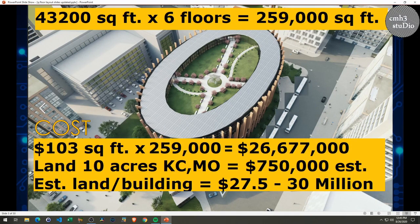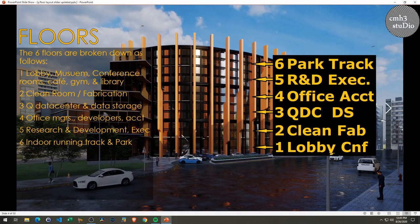This building will basically be six floors, about 259,000 square feet, and at a cost of 103 dollars per square foot — this is Kansas City, Missouri — the numbers will cost about 26.6 million dollars to build. The land itself, which would be roughly 10 acres, would cost about 750,000 dollars, bringing the total land and building cost to somewhere between 27.5 and 30 million dollars to create this building that would house the Q company.